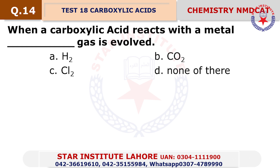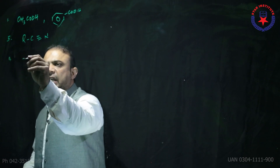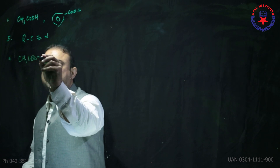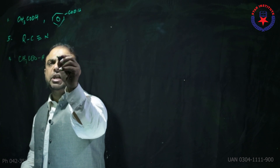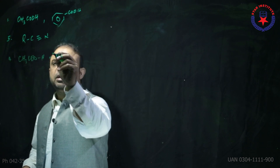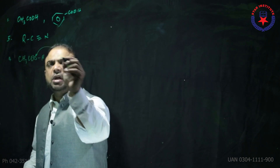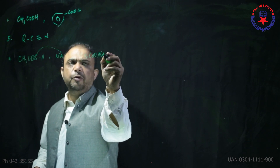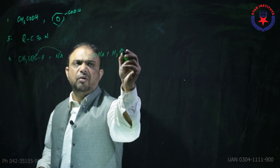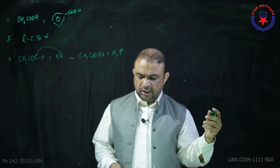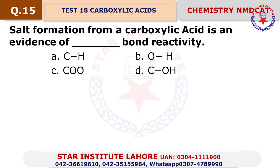Question number 14: When a carboxylic acid reacts with a metal — write the quick reaction. For example, with sodium: sodium attacks the oxygen atom, forming CH₃COO⁻Na⁺, and hydrogen gas is evolved. Choice alpha — hydrogen gas is produced.